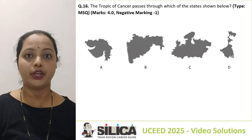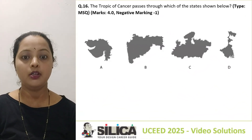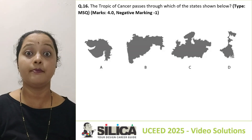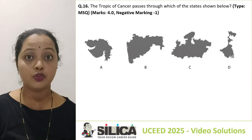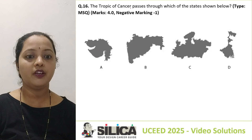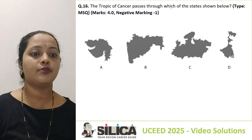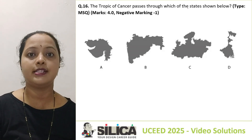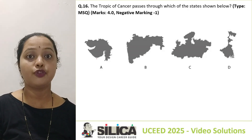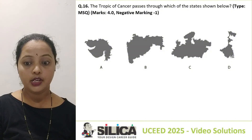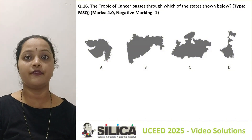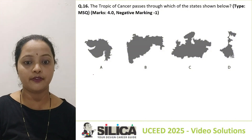We are discussing solutions to UC 2025 paper. This is question number 16, an MSQ question with multiple answers, so be careful. The topic: the Tropic of Cancer passes through which of the states given below? First, you should be able to identify these states from the figures and images given.